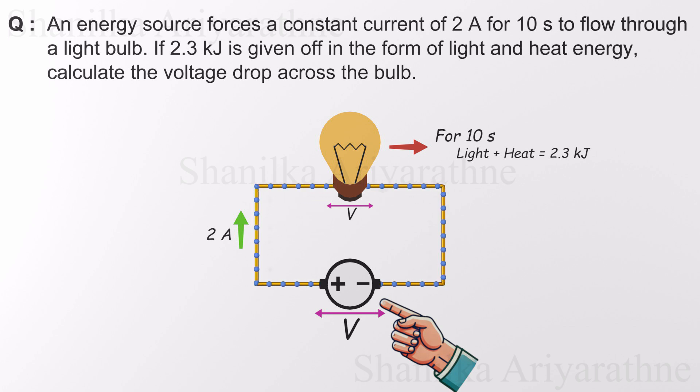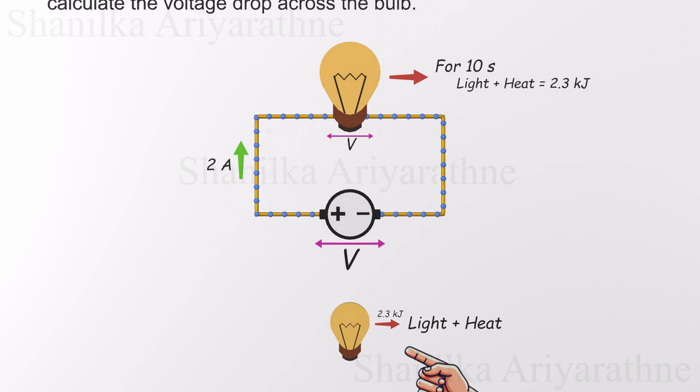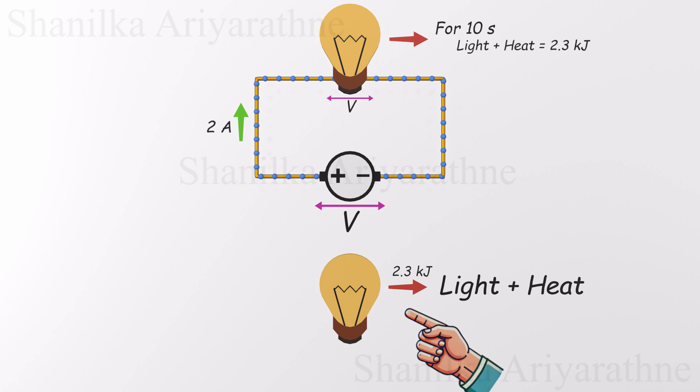What really matters here is that the voltage source is doing work. It's pushing charges, electrons, through the light bulb. And as those electrons move, the energy they carry is converted into light and heat. We're told that over a 10-second period, the bulb releases 2.3 kilojoules of energy.